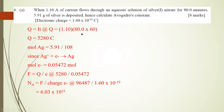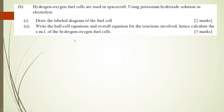A student asks: 'I thought Avogadro's constant is 6.02 × 10²³?' The teacher clarifies: don't forget this is an experiment, so when you calculate using experimental data the result will be slightly off from the accepted value. That is how you calculate question 6b (first part).